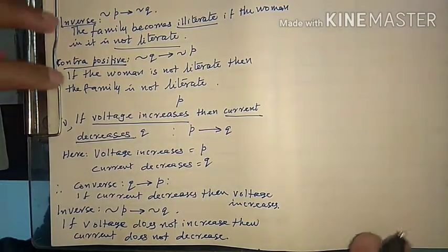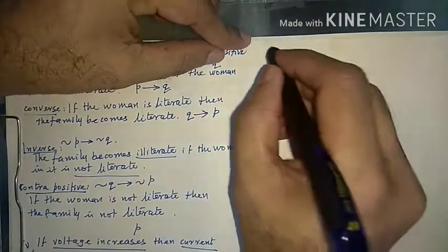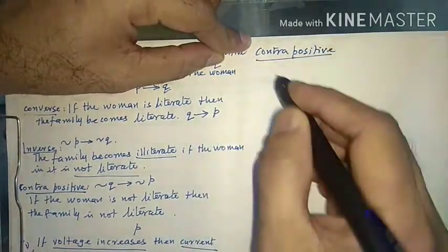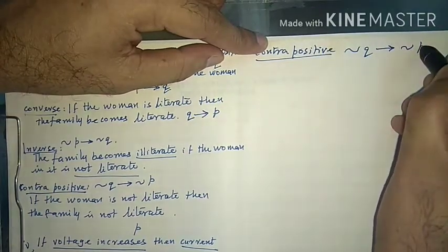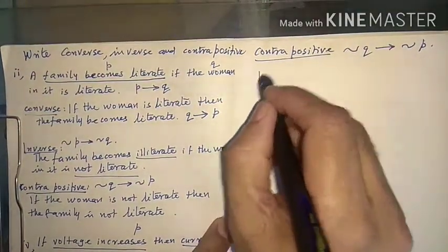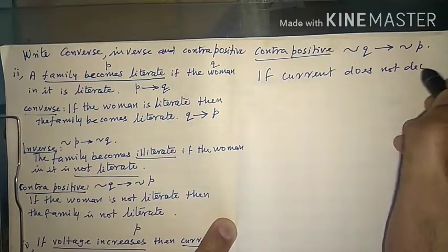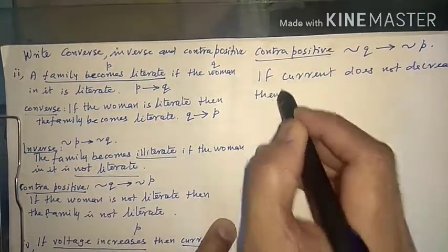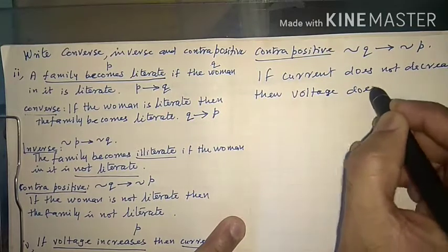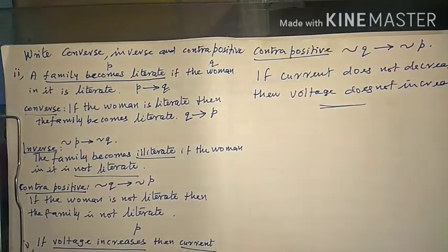Both are inversely proportional, so that makes sense. Contrapositive (¬Q implies ¬P): 'If current does not decrease, then voltage does not increase.' This is the last question. Please try the other questions on your own. We will continue in the next session.